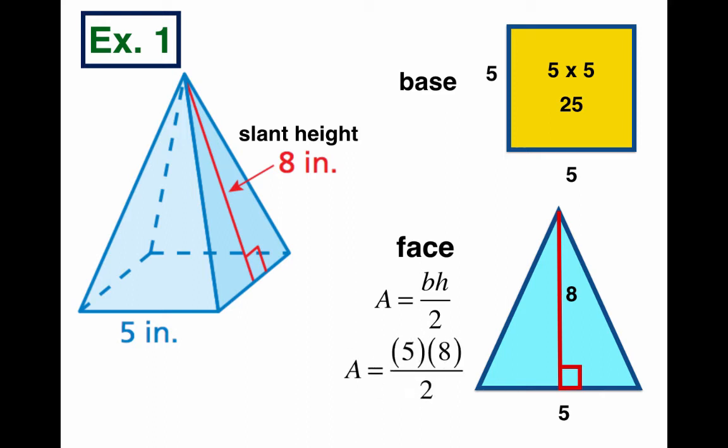So we're going to multiply the base times the height and divide by 2. We're going to do 5 times 8 divided by 2. Now 5 times 8 is 40, and 40 divided in half is 20. So the area of this triangular face is 20, but how many triangles are there? Yeah, there's 4 of them.